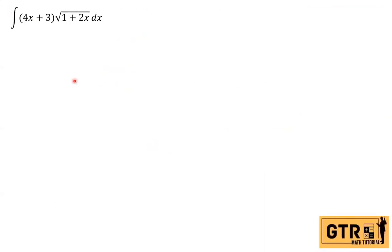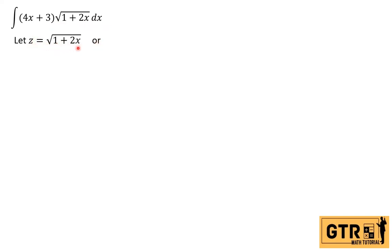We have the integral of (4x + 3) times the square root of (1 + 2x). The substitution we're going to use is z = square root of (1 + 2x). If we square both sides, we get z² = 1 + 2x.